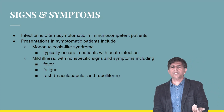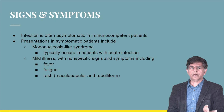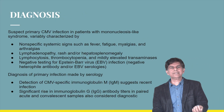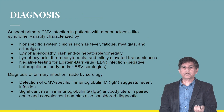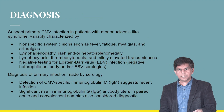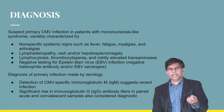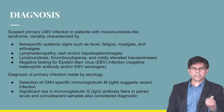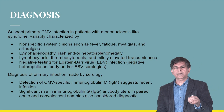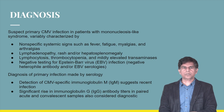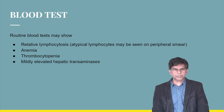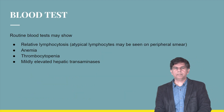For diagnosis, you need to rule out other causes like Epstein-Barr virus. Detection of CMV-specific immunoglobulins is useful: IgM indicates recent infection, while IgG indicates latent or previous infection. Routine blood tests look for reactive lymphocytosis, anemia, thrombocytopenia, and mildly elevated hepatic transaminases.